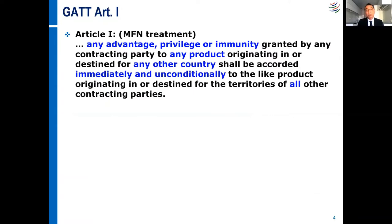We mentioned non-discriminatory. Article 1 of GATT — MFN treatment, most favored nation — says that any advantage, privilege or immunity granted by a contracting party to any product originating in or destined for any other country shall be accorded immediately and unconditionally to a like product originating in or destined for the territories of all contracting parties.